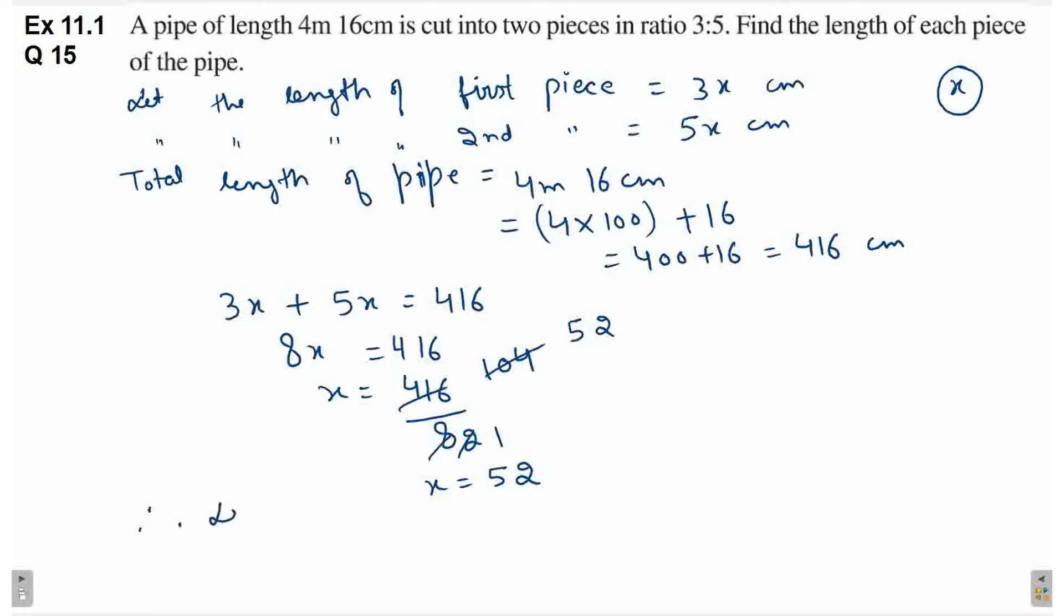Therefore, length of first piece is equal to 3 x 52 is equal to, 3 2s are 6, 3 5s are 15, 156 centimeter.